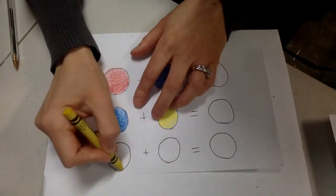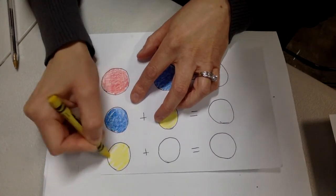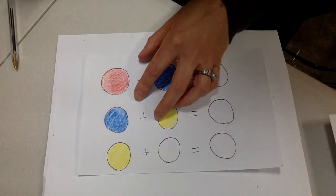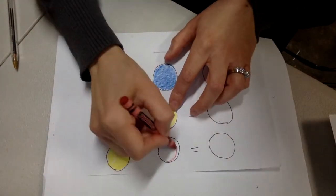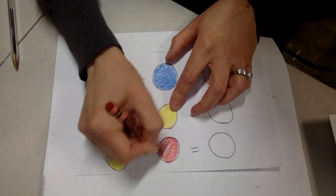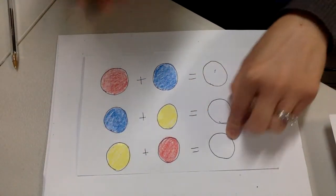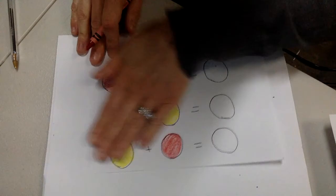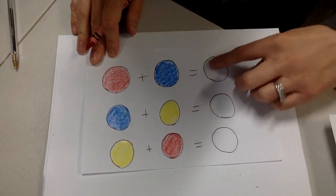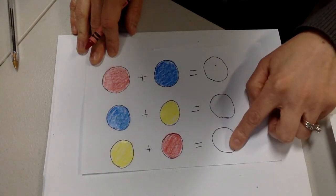And then we're going to do yellow plus red, and then you're going to fill in the answer. So you're going to take a picture of this that you've made, and these will be filled in with your answers on what they make.